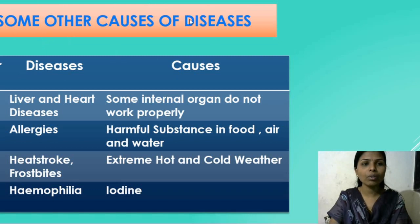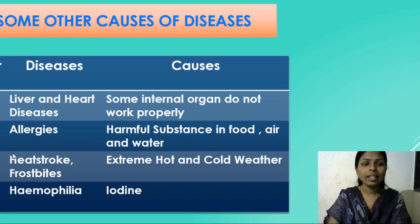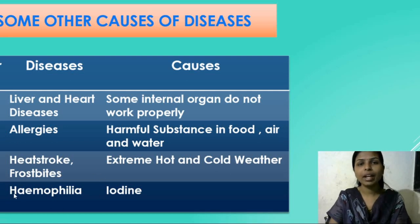Next we are going to discuss about some other causes of diseases like liver and heart diseases, allergies, heat stroke, and hemophilia. These are some diseases that are caused when some internal organs do not work properly. Some allergies are caused due to harmful substances in food, air, and water. Heat stroke is caused by extreme hot and cold weather conditions. To overcome these diseases, we have to take more iodine, which is present in iodized salt.